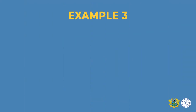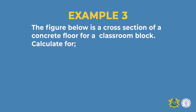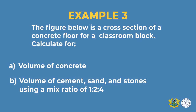Now let us look at example three, where we will not be given the total volume of concrete produced, which means we need to calculate it. Example three: the figure below is a cross-section of a concrete floor for a classroom block. Calculate (A) the volume of concrete, (B) the volume of cement, sand, and stone using a mix ratio of 1:2:4.